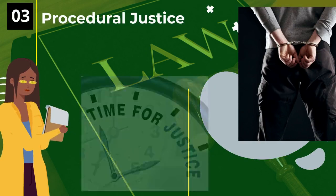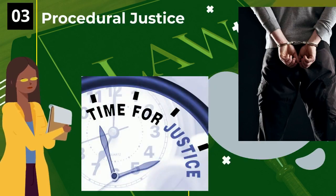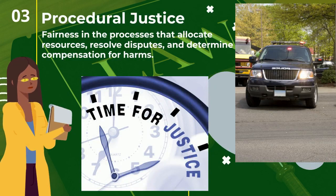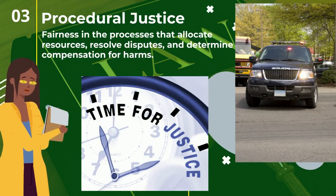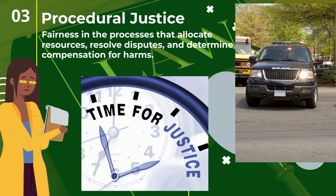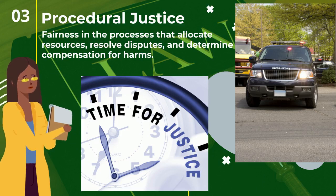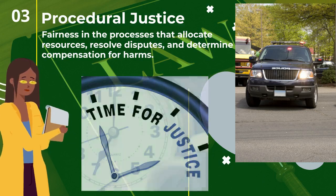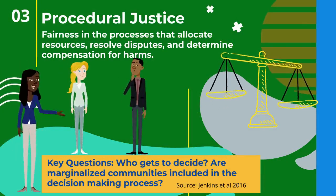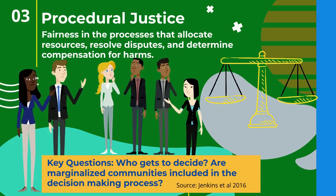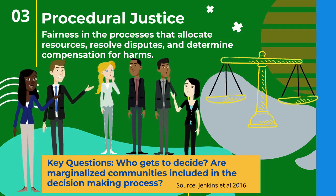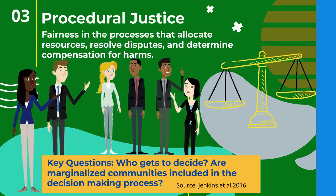Procedural justice looks at the law side of things. Specifically, it looks at whether there is fairness in the process that allocates resources, resolves disputes, and determines compensation for harms. Key questions include: who gets to decide, and are marginal communities included in the decision-making process?